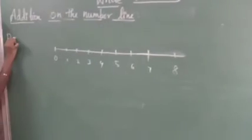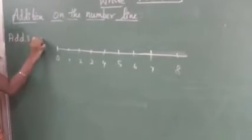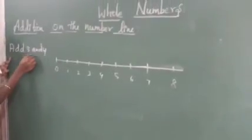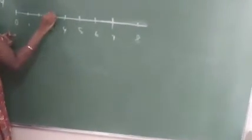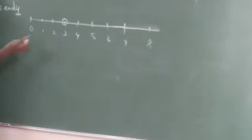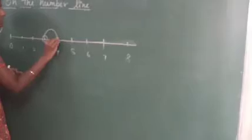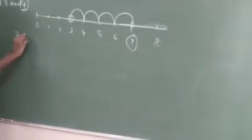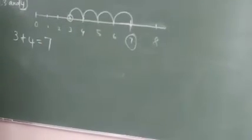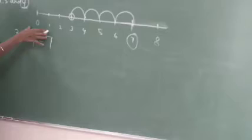Now I am going to add 3 and 4 using the number line. I mark the point corresponding to 3 on the number line. Since I have to add 4, I move 4 jumps to the right: first jump, second jump, third jump, fourth jump. So my final answer is 7. When I add 3 and 4, I get 7.